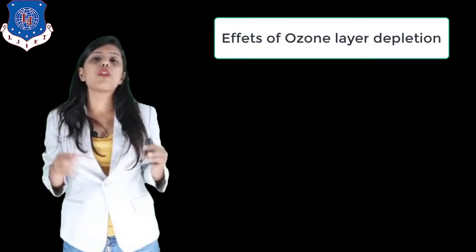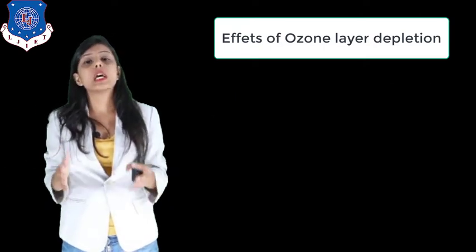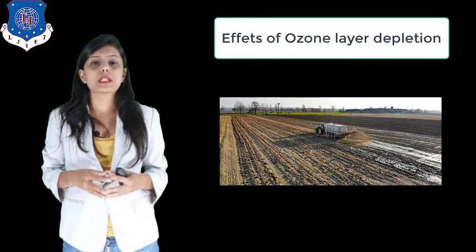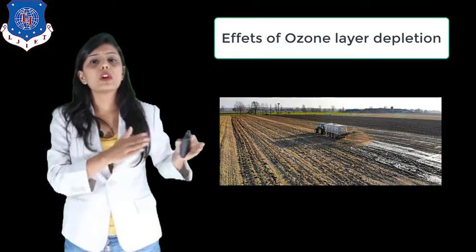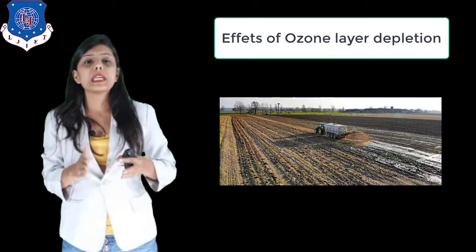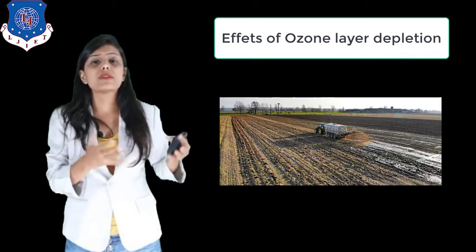The fifth effect is that the yield of vital crops like corn, rice, soybean, cotton, beans, peas, sorghum, and wheat will decrease.